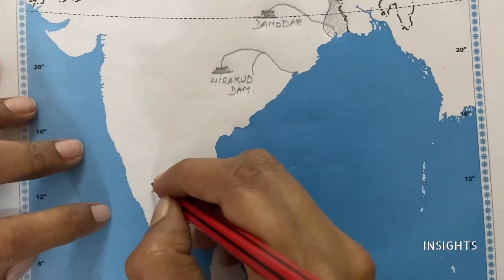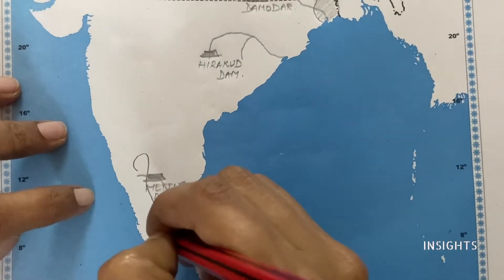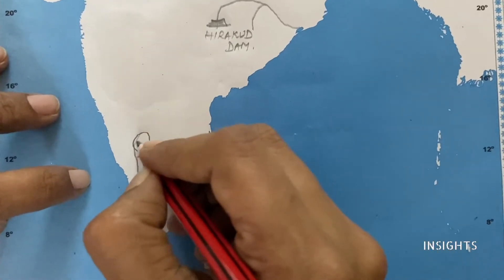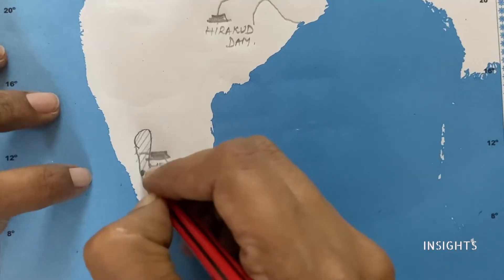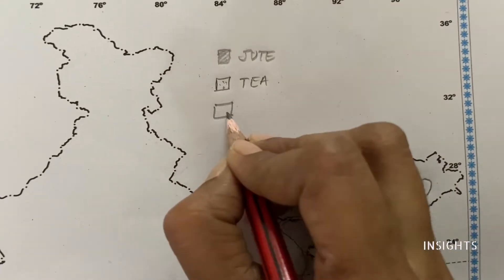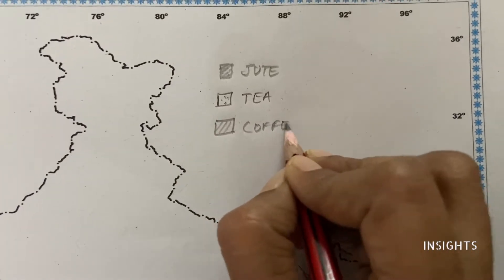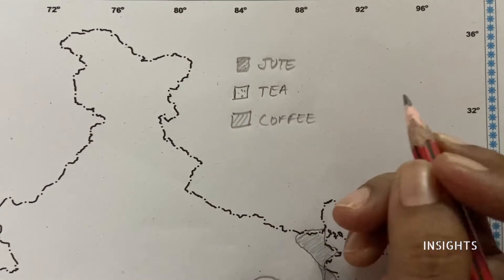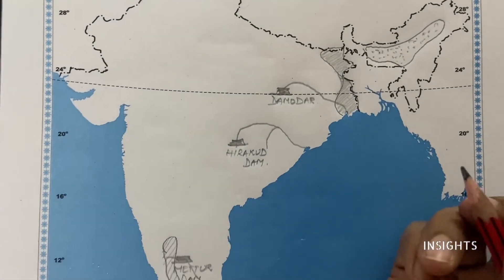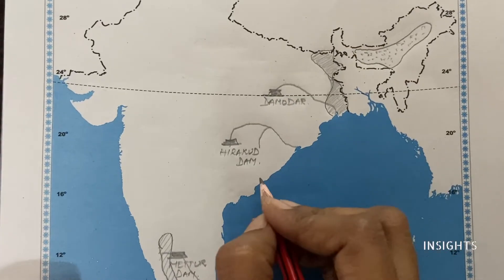In South India, coffee is grown in areas like Kodaikanal, Coorg, and Ooty. So let's draw some thin lines to indicate the coffee-growing region and mark it. So three things we have covered: jute, tea, and coffee.